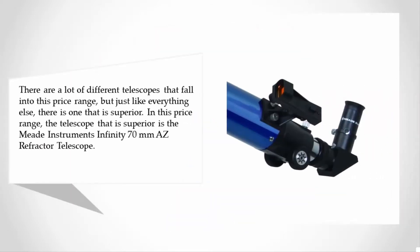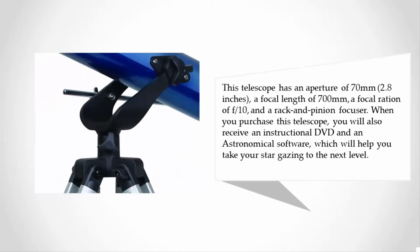...else, there is one that is superior in this price range. The telescope that is superior is the Mead Instruments Infinity 70 millimeters AZ Refractor Telescope. This telescope has an aperture of 70 millimeters (2.8 inches), a focal length of 700 millimeters, a focal ratio of f/10, and a rack and pinion focuser.